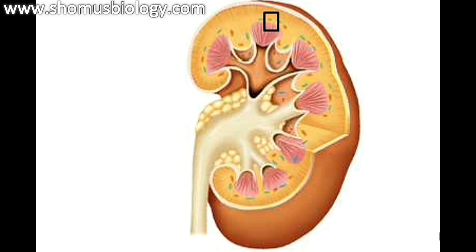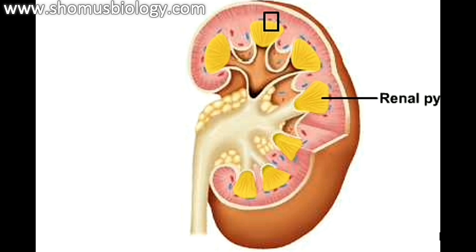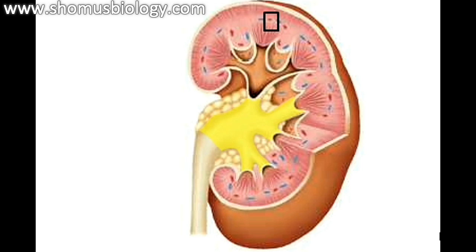The renal cortex is the outer granular-appearing region of the kidney; all nephrons originate in the cortex. The renal medulla is the inner region, which has a striated appearance due to triangles called renal pyramids. This region appears striated because collecting ducts from the nephrons run through it, taking entry into the renal pelvis — the central cavity where urine formed in the cortex and medulla collects. The ureter is a smooth-muscle-walled duct that carries urine from the kidney to the urinary bladder.